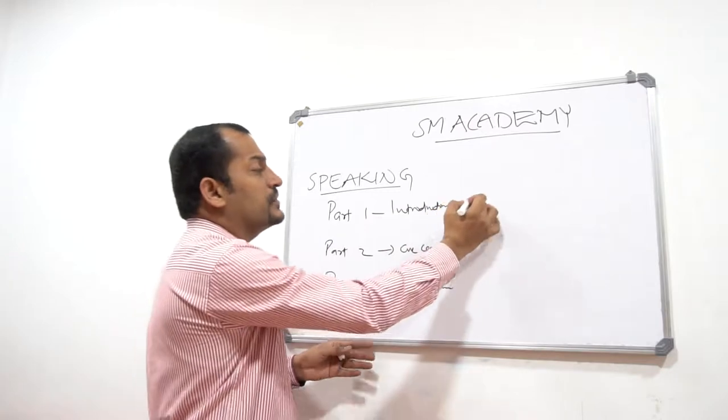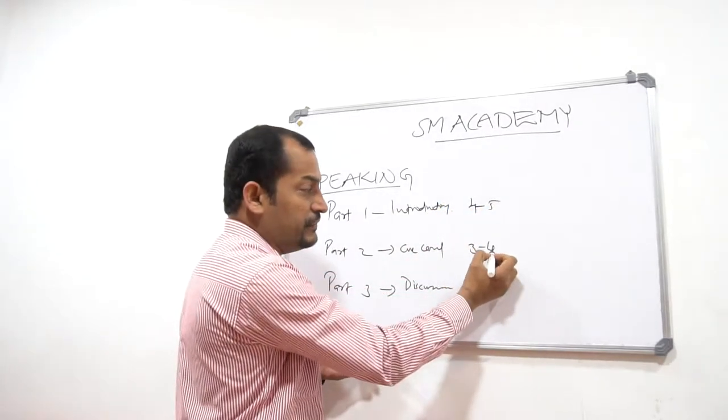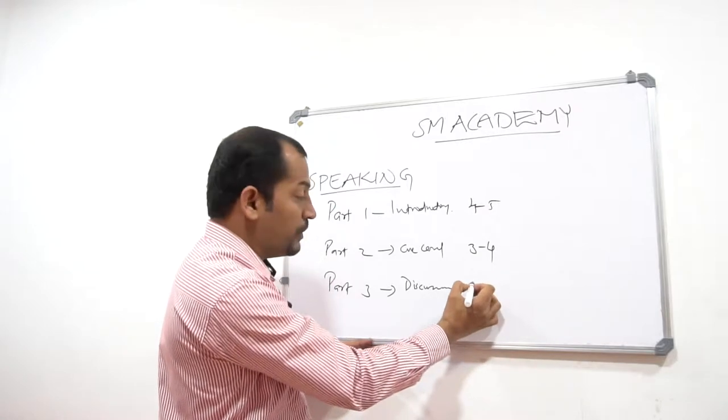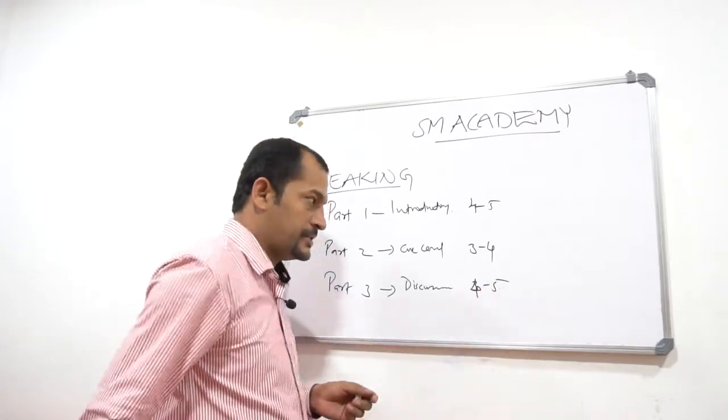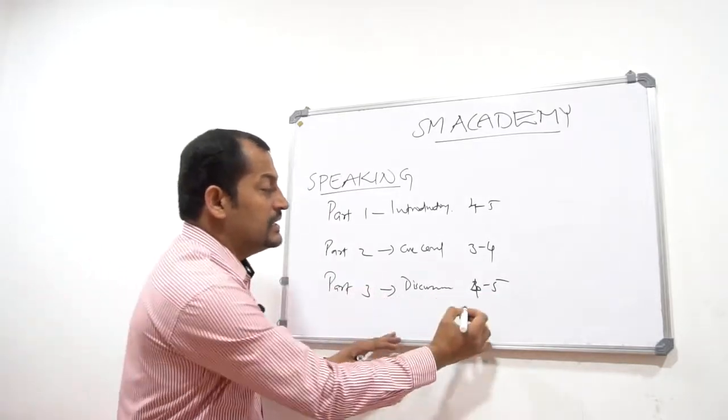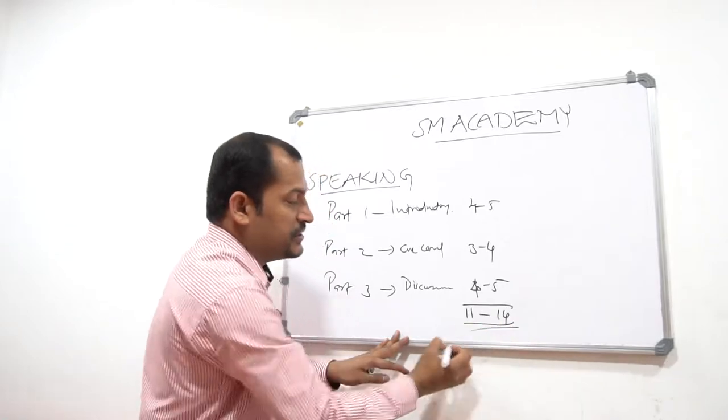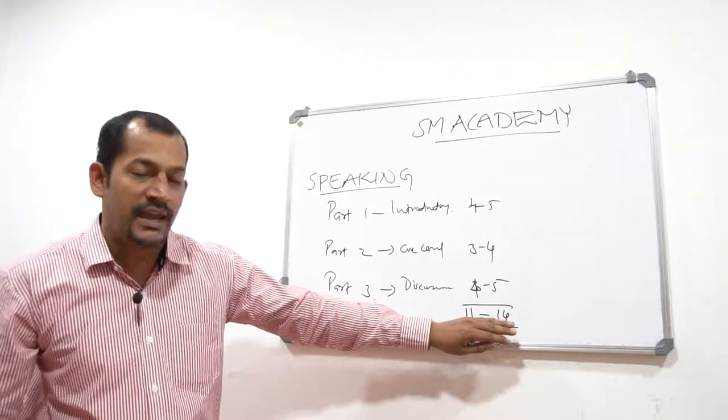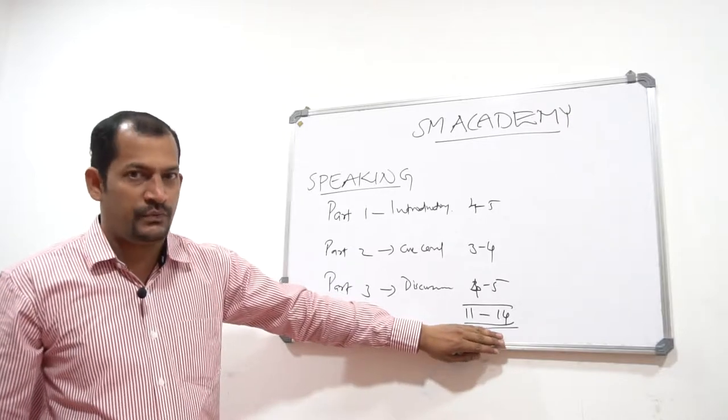Part 1 goes for 4 to 5 minutes, the cue card takes 3 to 4 minutes, and the final discussion round goes for 4 to 5 minutes. All together, it starts from 11 minutes and ends in the 14th minute. That's the duration time span for the speaking session of the IELTS examination.